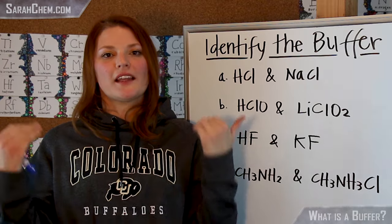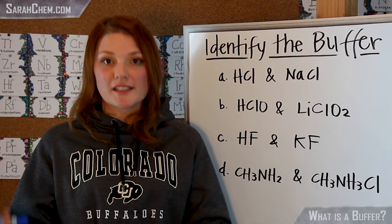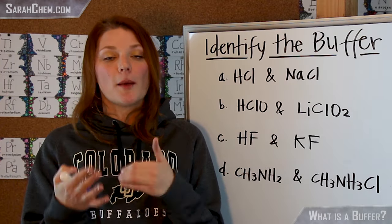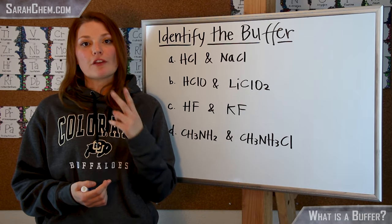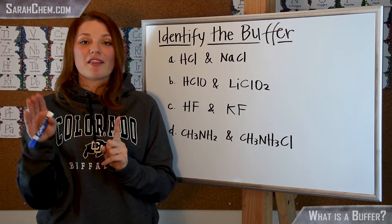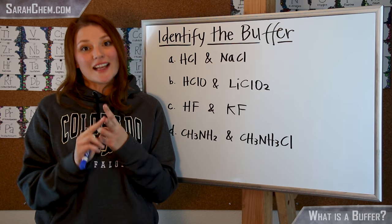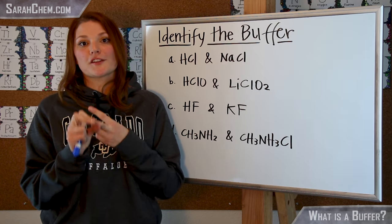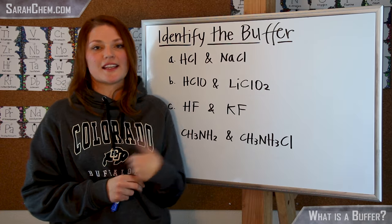Now let's take a look at an example where we can actually utilize that information to identify whether a combination of compounds is a buffer. Remember, the two things we're looking for are: one, is everything in there weak — no strong substances — and secondly, do we have a conjugate pair in solution? Let's use those two criteria to run through this list.